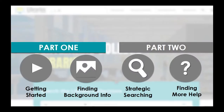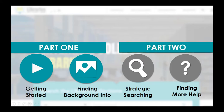If you haven't watched part one, go back to learn how to get started at the library and find some background information and keywords on your topic. In part two, you'll learn how to use your keywords to search strategically for information for your assignment and where you can go to get more research help.